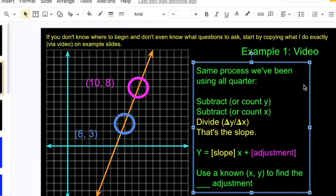Got our two points. Here's our steps to find the slope. Subtract or count in the y direction. The distance from three up to eight is plus five.